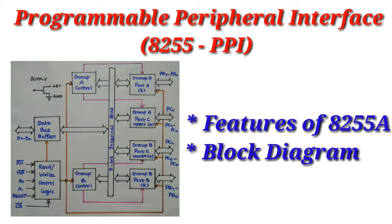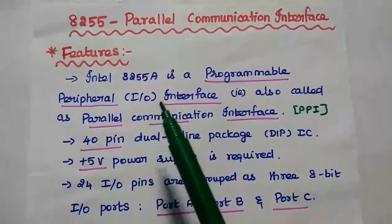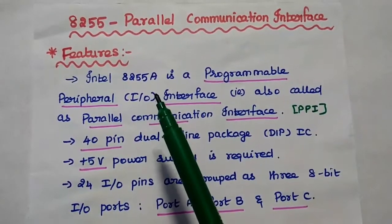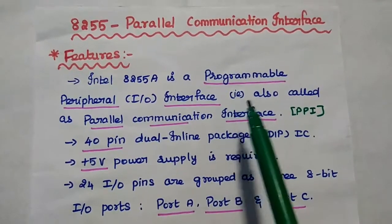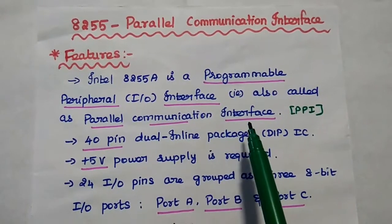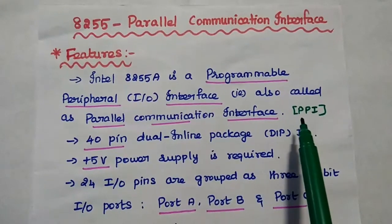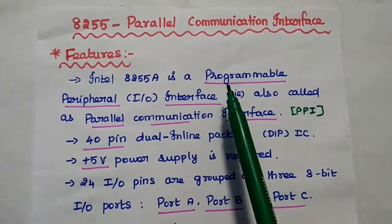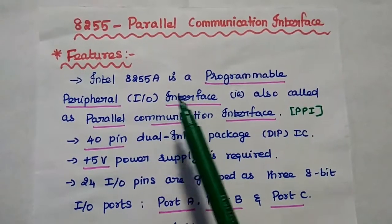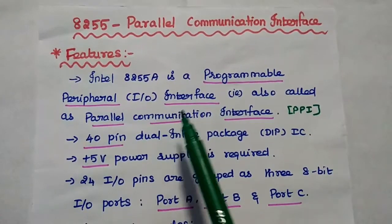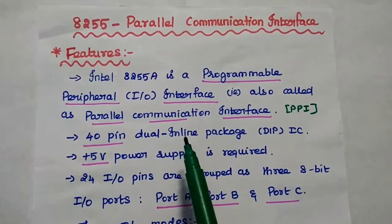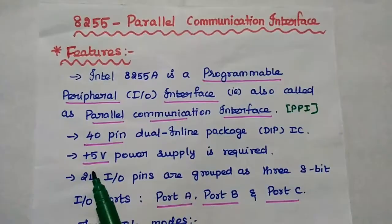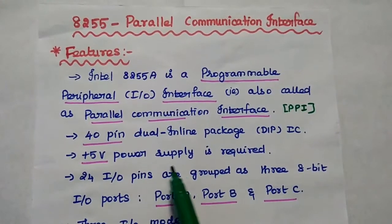Dear students, now we are going to discuss Programmable Peripheral Interface and its Block Diagram in detail. Intel 8255A is a Programmable Peripheral Interface, also called Parallel Communication Interface, simply denoted as PPI, where the peripheral represents the input and output devices. It is fabricated as a 40-pin dual inline package IC and requires plus 5 volt power supply for its operation.